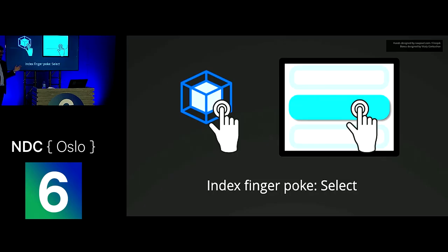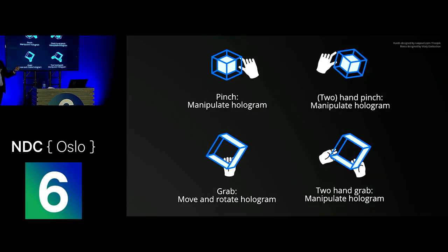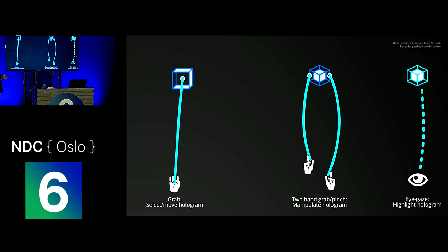Some of the interactions possible on the HoloLens 2 include touching holograms and detecting those touches — whether it's a button or an object. You can manipulate holograms directly: grab them with one hand, or grab with two hands to rotate or resize. You can also grab objects from far away by shooting a ray from your hand to manipulate from a distance without walking over. And you can use interactions in conjunction with eye gaze: look at an object, say a voice command, and have that command applied to the object you're looking at.